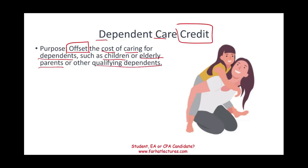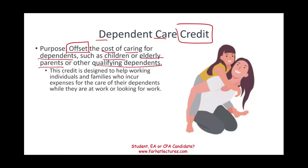Simply put, the credit is designed to help working individuals and families who incur expenses for the care of their dependents while they are at work or actively looking for work. There are special rules if you're actively looking for work. But generally speaking, if you are working and you have your kids in a daycare center or you're paying someone to look after your kids, the government will give you a credit to offset that cost, so you can go to work.